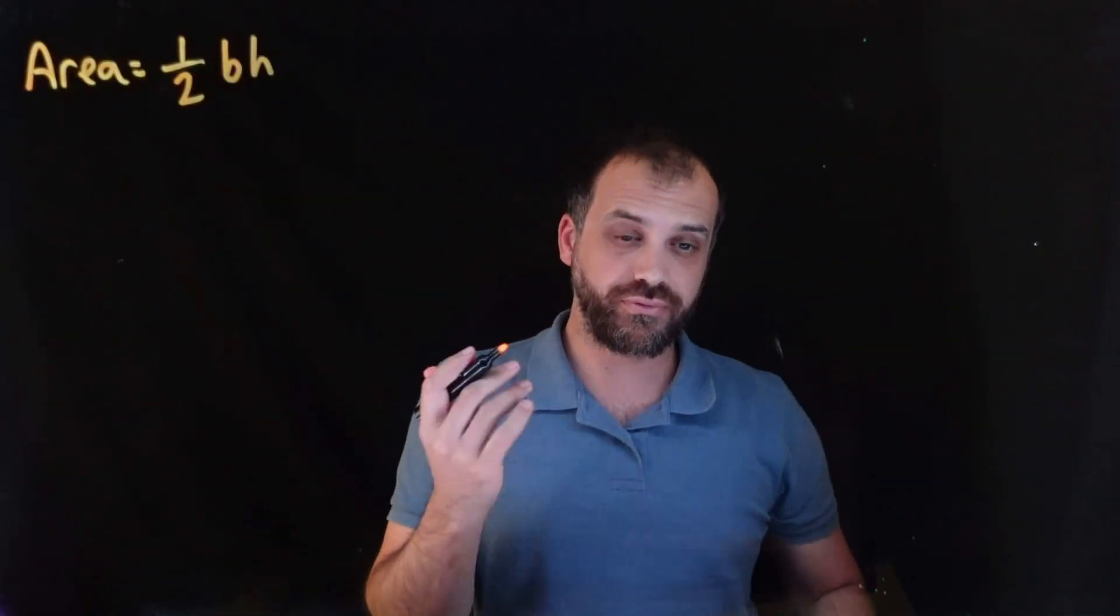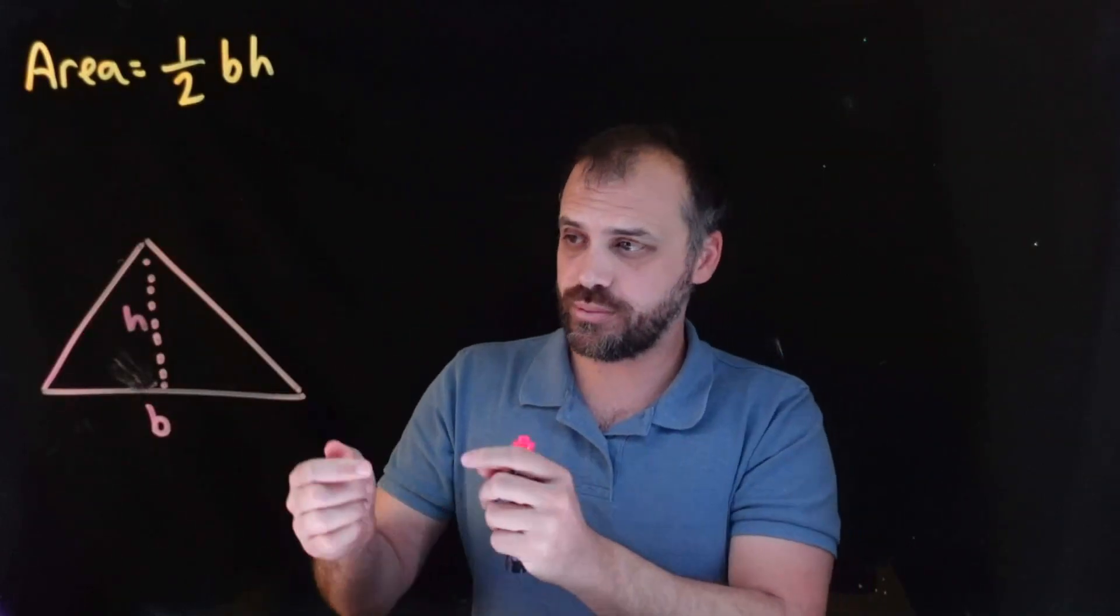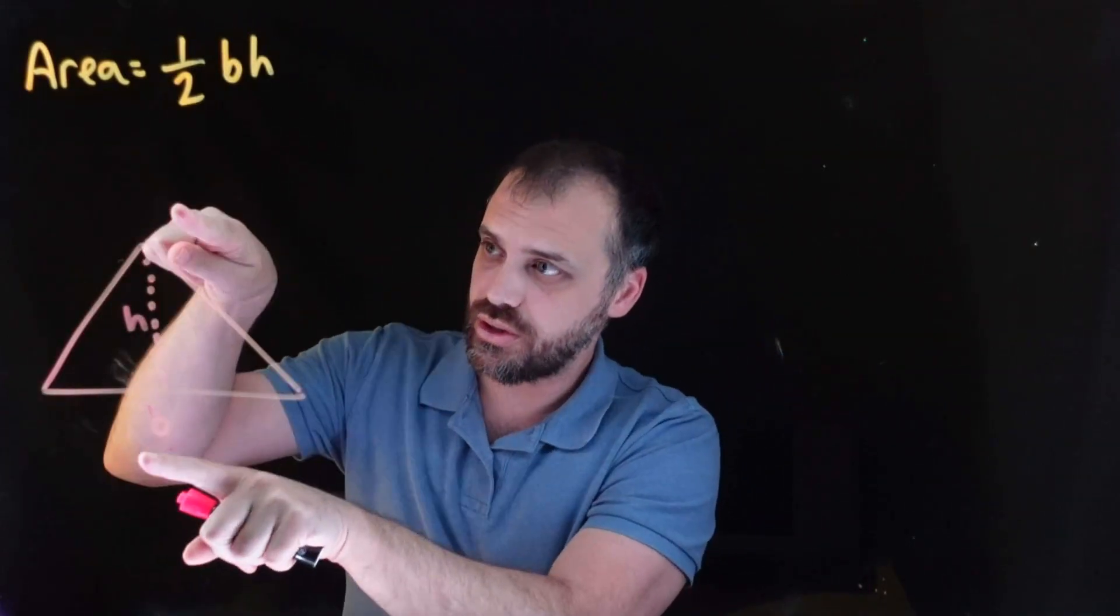So a very quick one here because it's just a cute little formula, the area of a triangle. Now you already have a formula for the area of a triangle. Area equals half of the base times the height. This is a great formula, half of the base times the height.